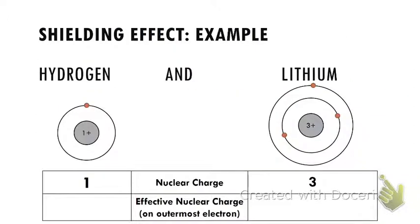Let's see that in a couple of quick, simple examples. Here I have two simple elements in the same column: hydrogen and lithium. Hydrogen has one proton in the nucleus; lithium has three. They each have a corresponding number of electrons around the outside. Looking at just the plain nuclear charge, one proton in the nucleus means hydrogen has a nuclear charge of one, and lithium has a nuclear charge of three. This hydrogen electron is in the first energy level, which means there is nothing in between it and the nucleus, so it will always feel the full nuclear charge.